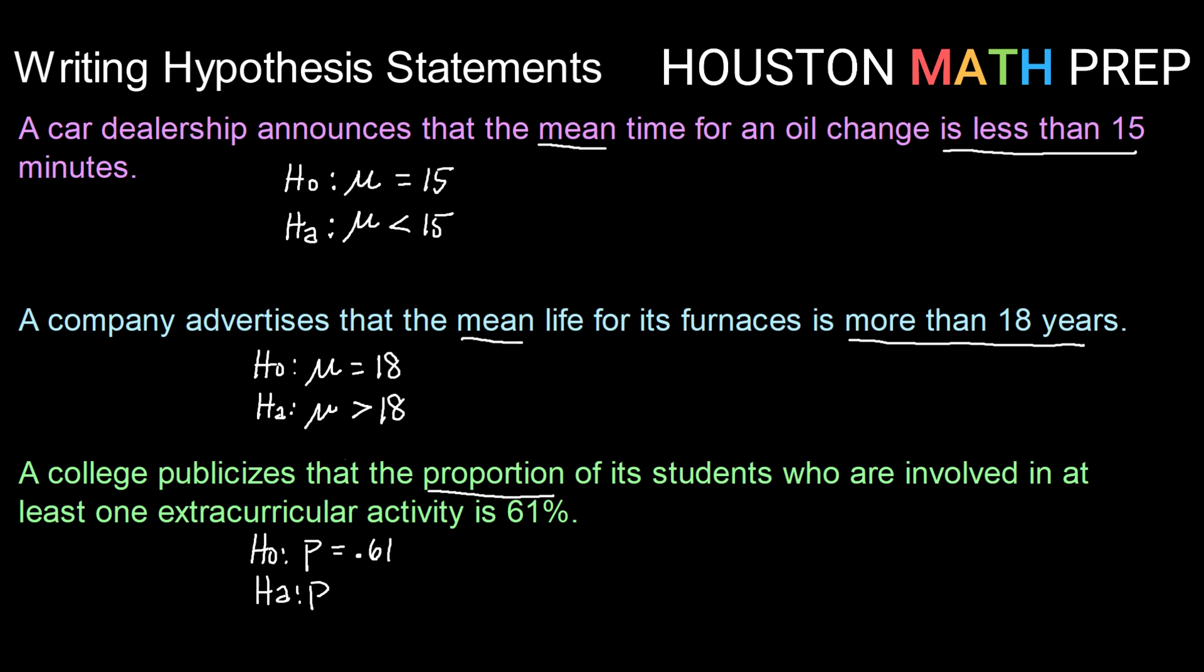And here the claim is that it's equal to 0.61. So in this case, our null hypothesis is actually our claim. So an alternative hypothesis is just whatever is the opposite. So we would say our alternative hypothesis is that the proportion of students involved in at least one extracurricular activity is different than 0.61.